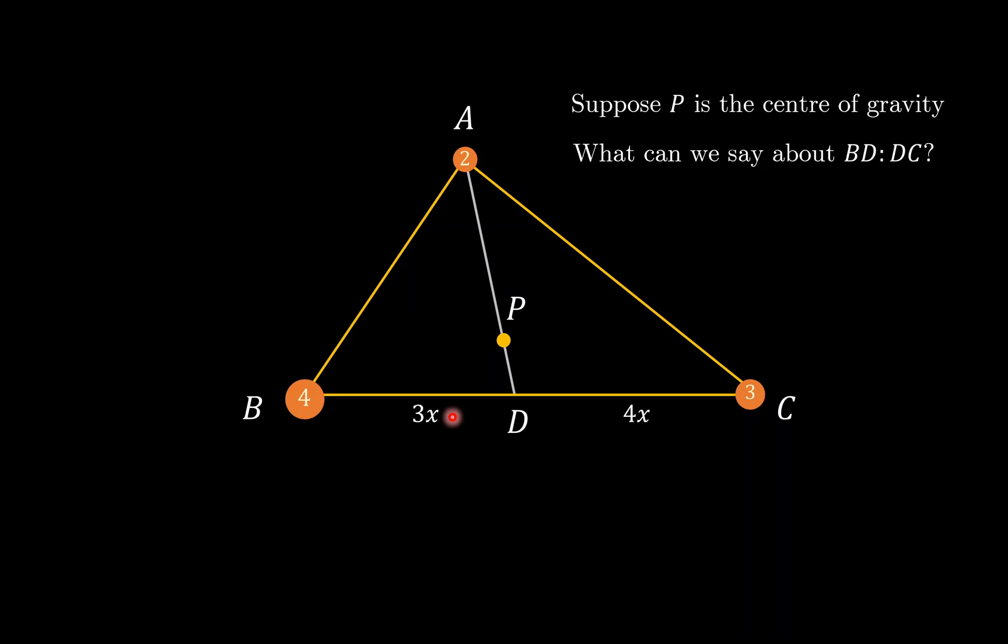Basically, skipping past all the intermediate reasoning, we have converted the weight ratio 4 to 3 into distance ratio 3 is to 4. Similarly, if you extend CP to meet at F, then the length ratios here is 4 is to 2, because you look at the weight ratios is 2 is to 4. Similarly, BP extended to E cuts AC into the ratio 3 is to 2. So this is actually quite intuitive.